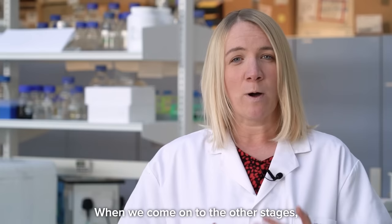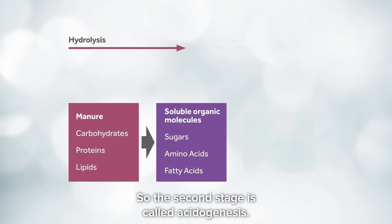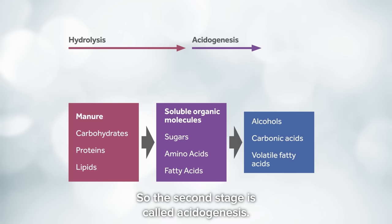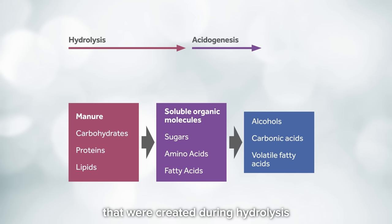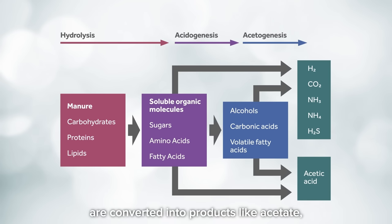When we come on to the other stages, different microorganisms take over and carry out different parts of the process. The second stage is called acidogenesis, where those simple molecules created during hydrolysis are broken down into things like organic acids. We then have a different set of microorganisms working on acetogenesis, where the molecules from the first two processes are converted into products like acetate, ammonium, and carbon dioxide.